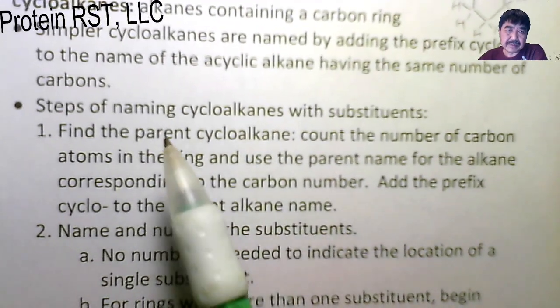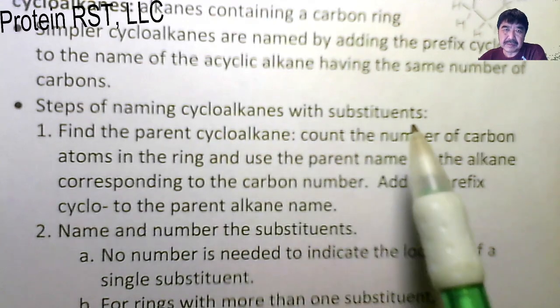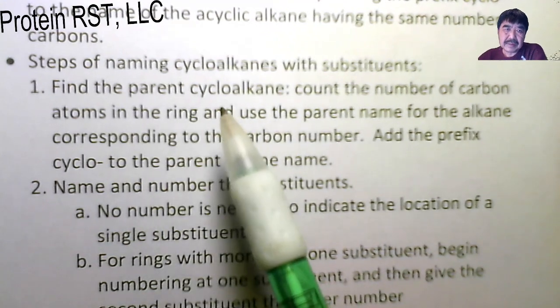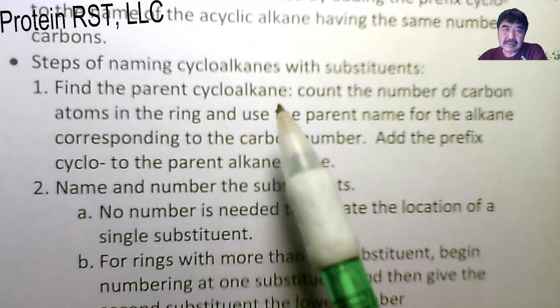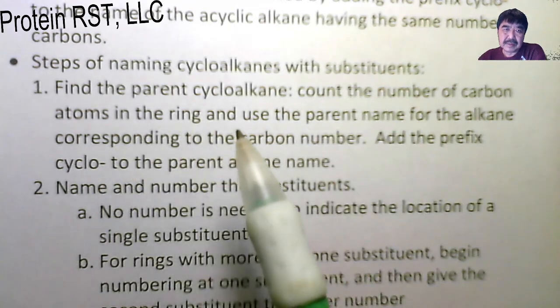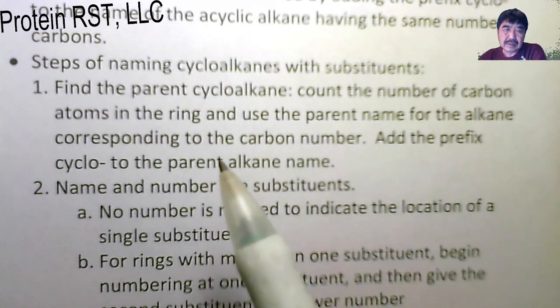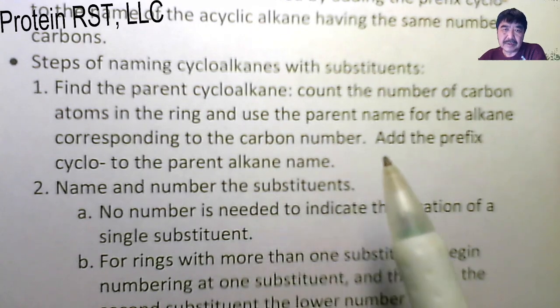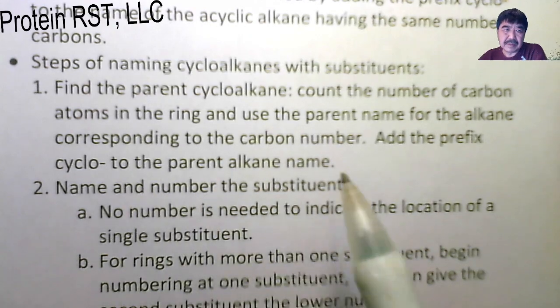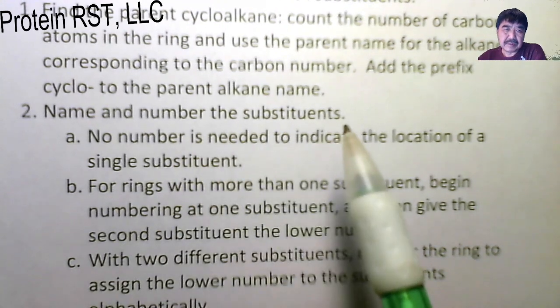Let's take a look at steps how to name cycloalkanes with substituents. First, find the parent cycloalkane. Count the number of carbon atoms in the ring and use the parent name for the alkane corresponding to the carbon number. Add the prefix cyclo- to the parent alkane name, then name and number the substituents.